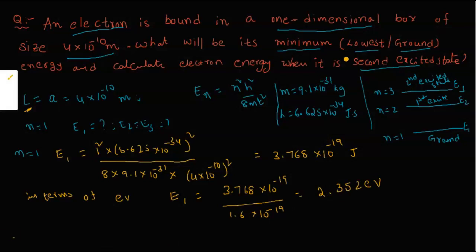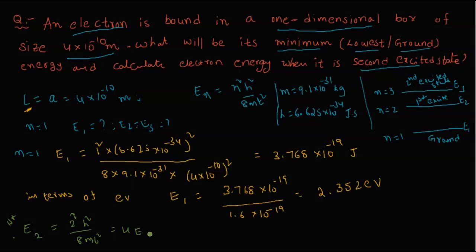Next, we calculate E2 for the first excited state (n=2). E2 = 2² × h²/(8mL²) = 4 × E1. Therefore, E2 = 4 × 2.352 = 9.408 electron volts.